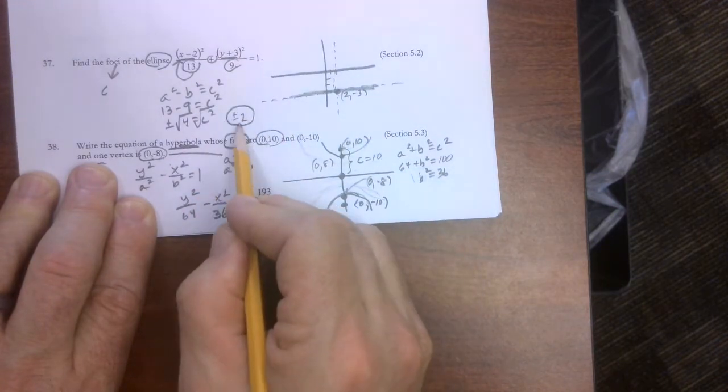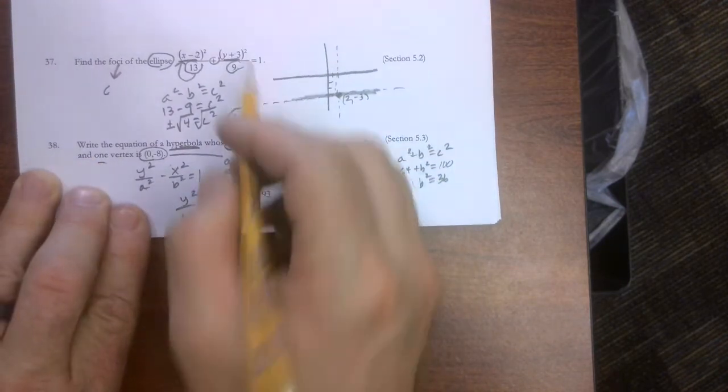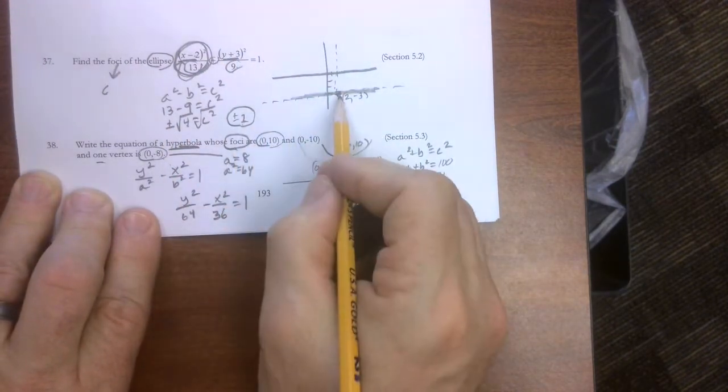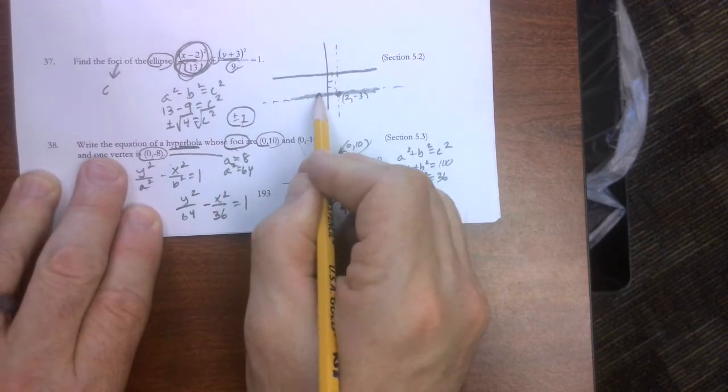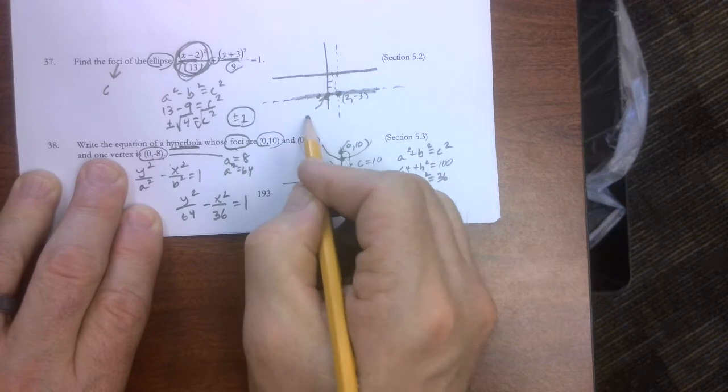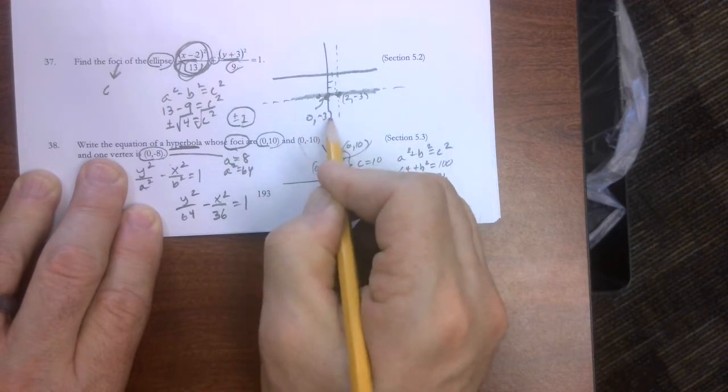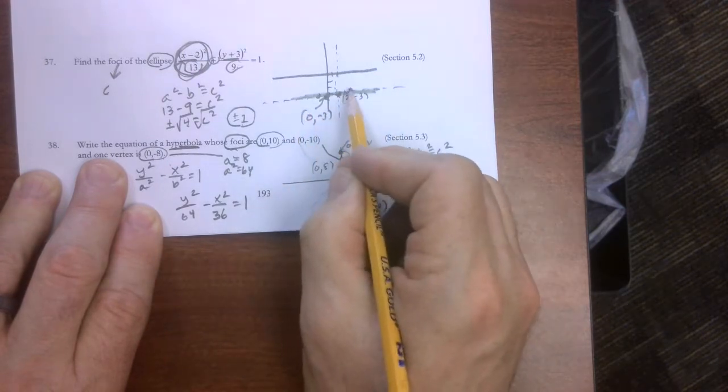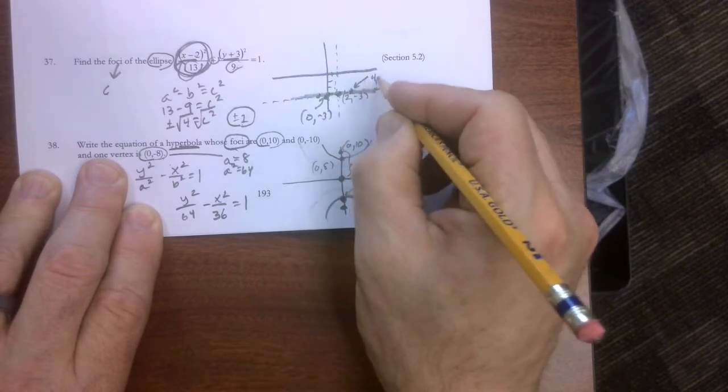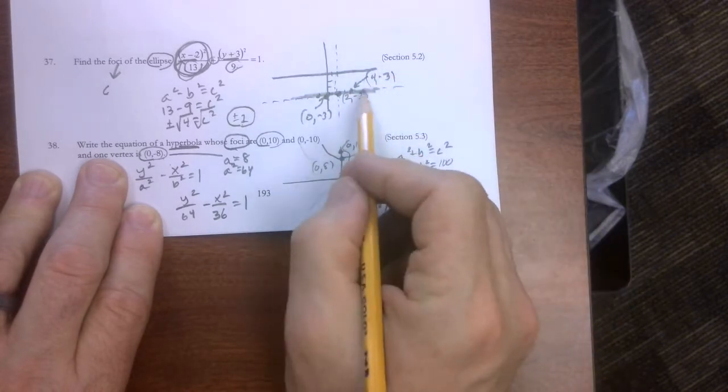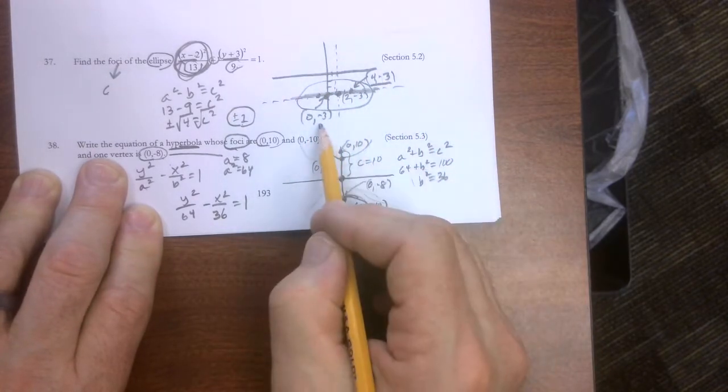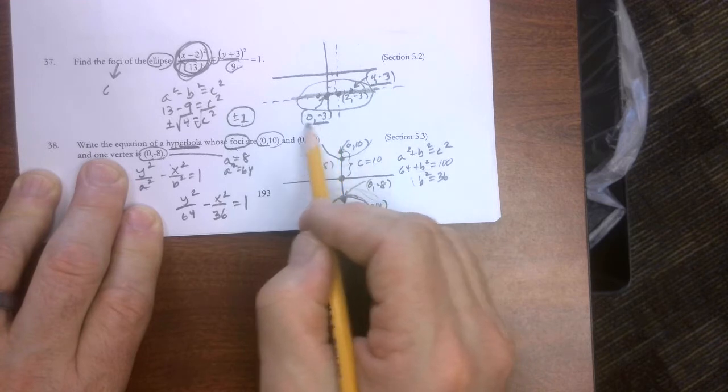Now remember that's the distance I need to move on the major axis, which is my x-axis, to find the foci. Which means I need to move left 2, which would take me right to here. 0, negative 3. But I need to move right 2, which would take me to 4, negative 3.